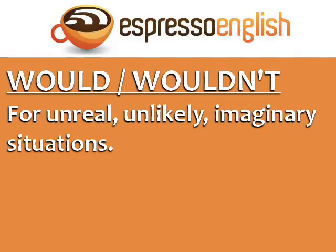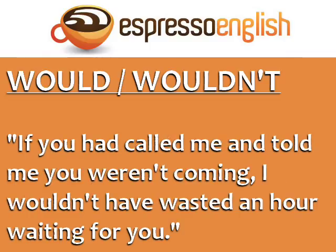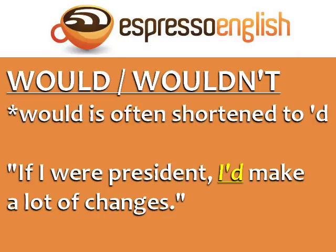Use would and wouldn't for unreal, unlikely, or imaginary situations. For example, if I were president of the country, I would make a lot of changes. If you had called me and told me you weren't coming, I wouldn't have wasted an hour waiting for you. Would is often shortened to apostrophe D — if I were president, I'd make a lot of changes.